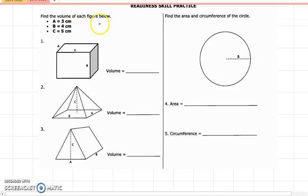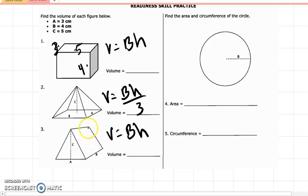It says find the volume of each figure below. It's giving you the numbers to use, like a is 3 centimeters, or a is 3, b is 4, and c is 5. All you have to remember is the equation. This is a prism. Volume equals area of base times the height. This is a pyramid. Volume equals area of base times the height divided by 3. This is a triangular prism. Volume equals area of base times the height.